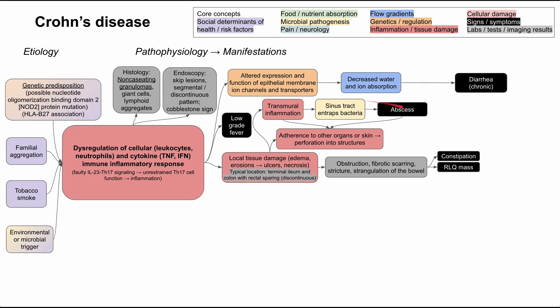All of these mechanisms together — the abscess, transmural inflammation, local tissue damage, ulcers, and necrosis — can cause the bowel to adhere to other organs or even to the skin, causing a perforation into other structures. This is a later complication that usually occurs in untreated patients with severe, longstanding inflammation. When that happens, it's called a fistula. You can have a fistula from the gut to the skin, from the gut to the bladder, or even between two loops of gut.